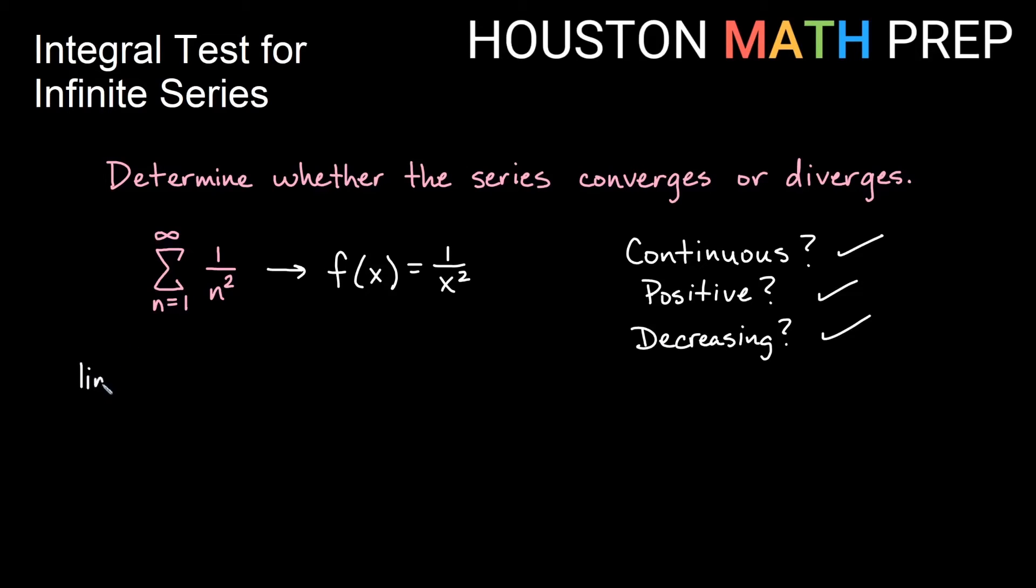For our integral test, we'll go ahead and use the limit as b approaches infinity. Now this is just a power rule. We can think of this like x to the negative 2. So we'll go ahead and do that. Let's look at the limit as b approaches infinity of the antiderivative of this. So the power would go up by 1, and then I divide by the new power. So the power going up by 1 from negative 2 would make it x to the minus 1. We'd also get a negative. So the antiderivative here is negative 1 over x.